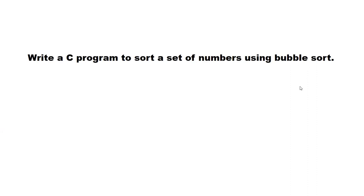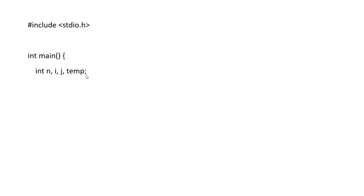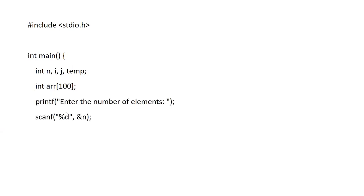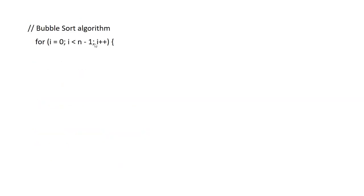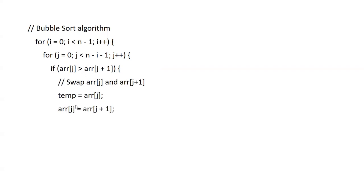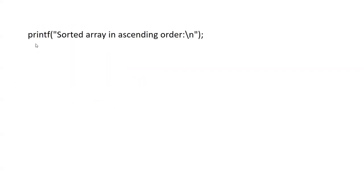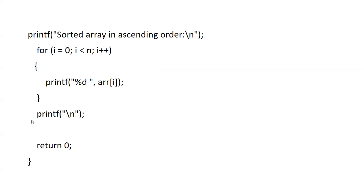Write a C program to sort a set of numbers using bubble sort. In main, declare variables n, i, j, temp and the array. Print 'enter the number of elements' and scan n. Enter the elements using a for loop: for i=0; i<n; i++, scan a[i]. For the bubble sort: for i=0; i<n-1; i++, and for j=0; j<n-i-1; j++, if a[j] > a[j+1], swap using temp: temp=a[j], a[j]=a[j+1], a[j+1]=temp. End if, end inner for, end outer for. Print the sorted array: for i=0; i<n; i++, print a[i]. Return 0.